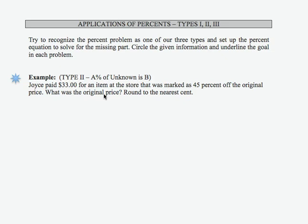So let's see what's going to happen here. Joyce paid $33 for an item at the store that was marked as 45% off the original price. Let's circle some important information here. She paid $33, and the item was 45% off.